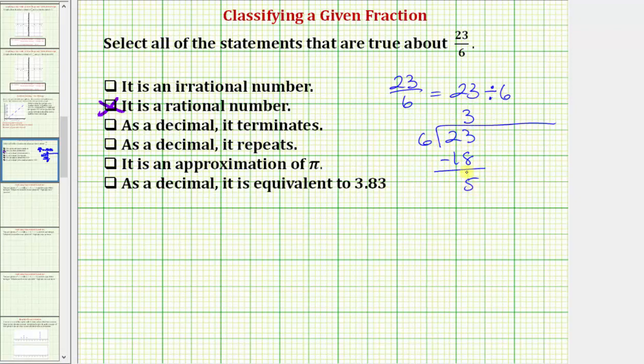But because we have a remainder, and we're converting the fraction to a decimal, we now add a decimal point to the right of 23, which would be here. Move it up to the quotient, and now we can add zeros to the right of the decimal point without changing the value of 23. So go ahead and put a zero here, and then move it down. Now we ask the question, how many 6's in 50.